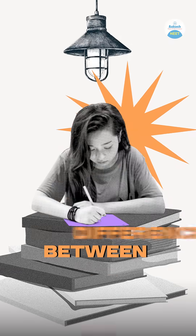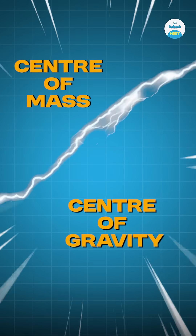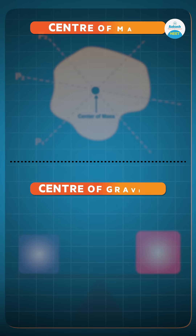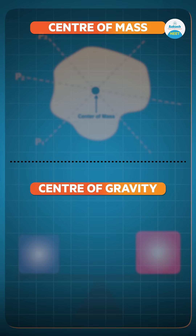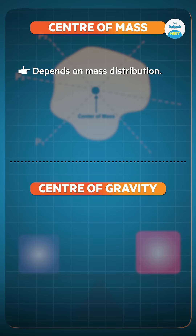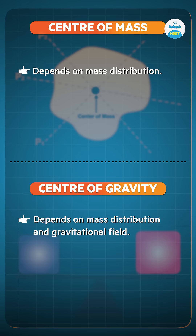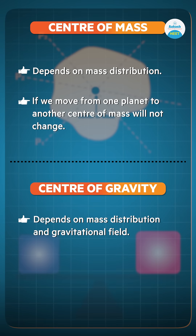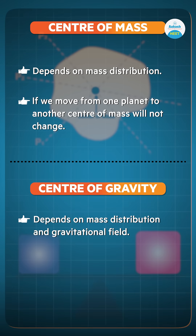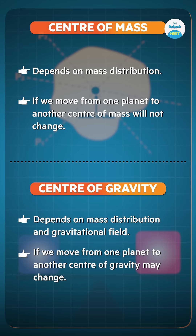Now let's understand the difference between center of mass and center of gravity. Center of mass depends only on the mass distribution, while center of gravity depends on the mass distribution as well as the gravitational field. Now if we move from one planet to another, the center of mass will not change; however, the center of gravity may change.